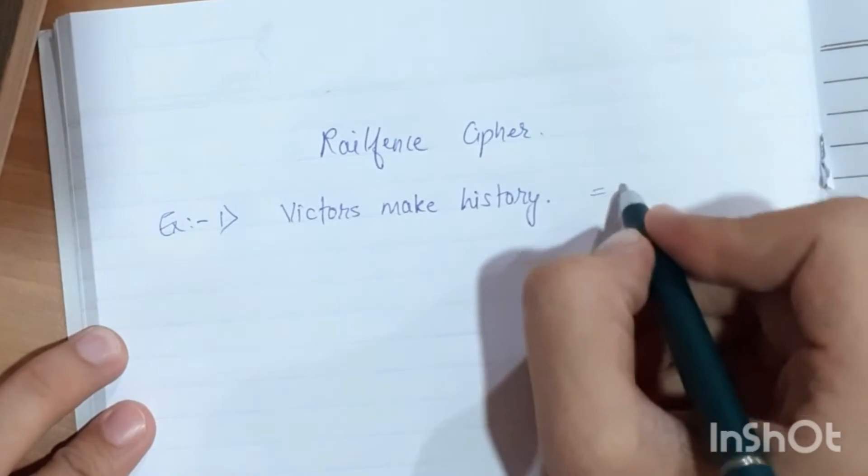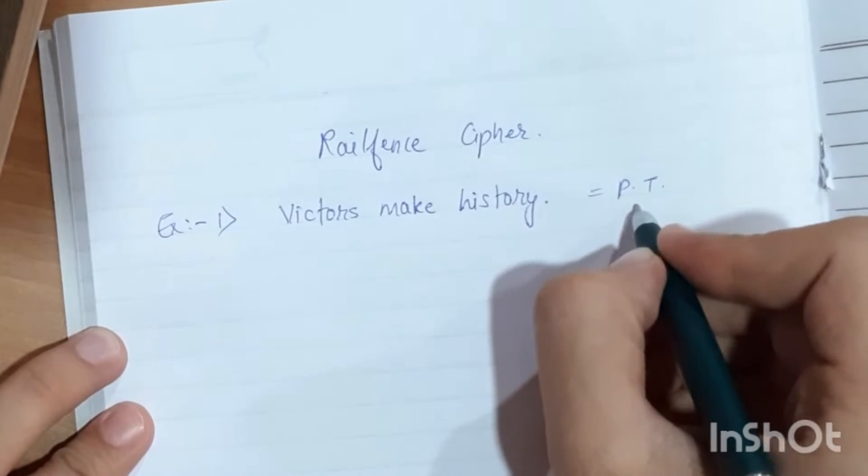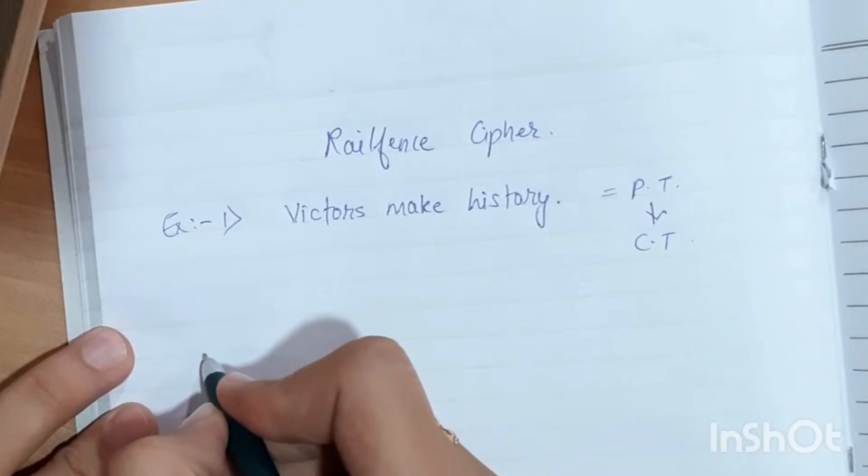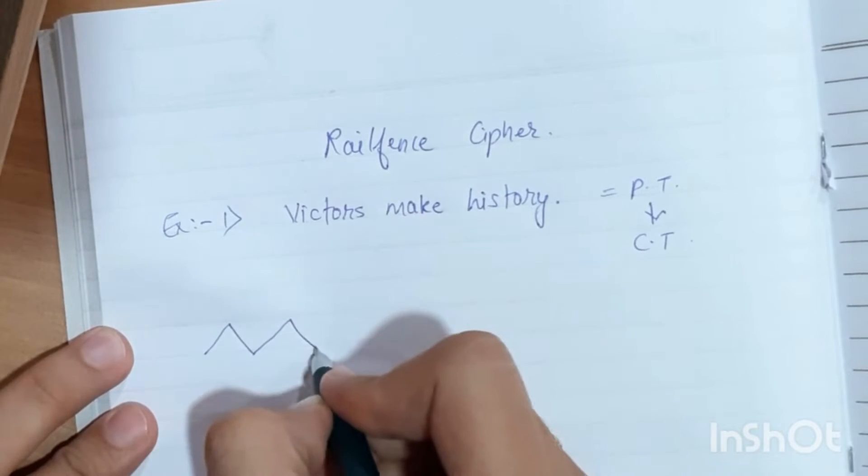Now we will make rail fencing. This is plain text. We will convert it into cipher text. Plain text can be read by anyone. Cipher text is encrypted.